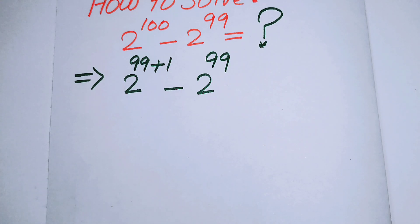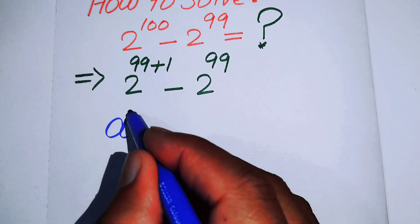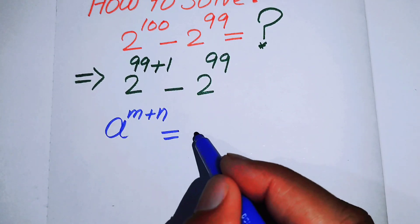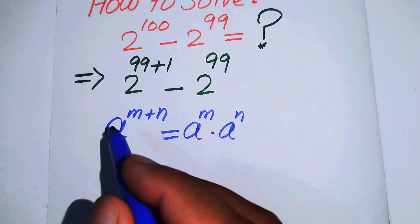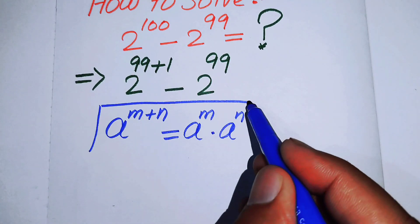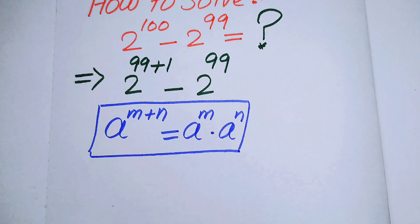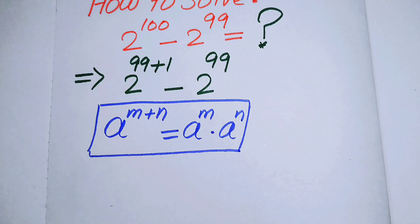In the next step we will use the nice exponential law. You know about this law: if we have a to the power of m plus n, it equals a to the power of m times a to the power of n. So now we can use this law.